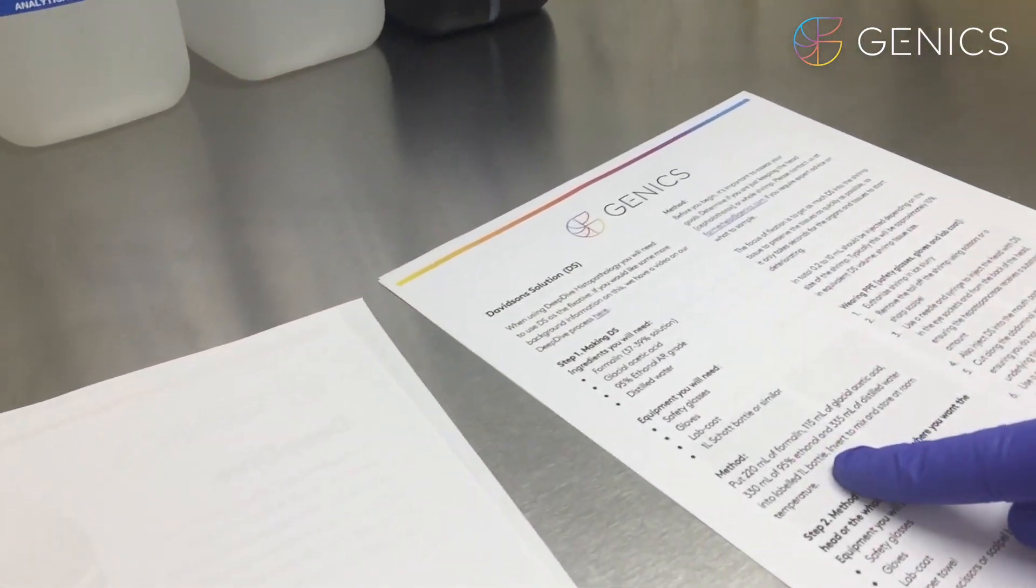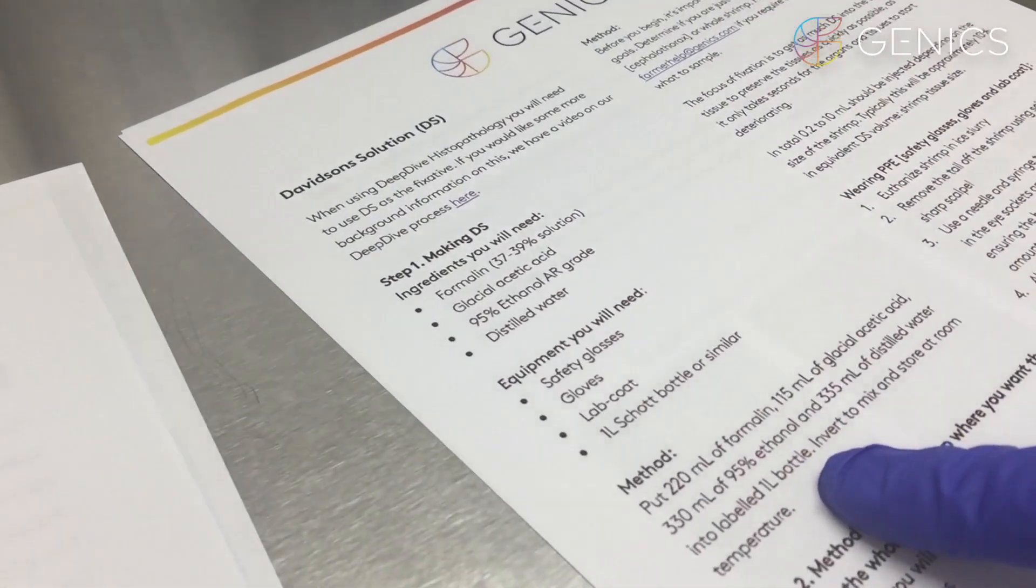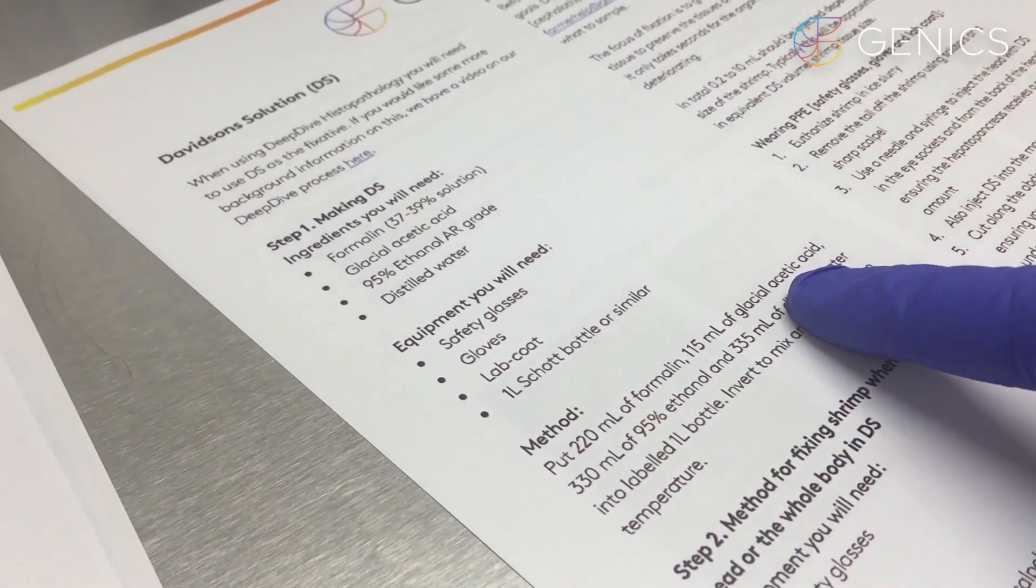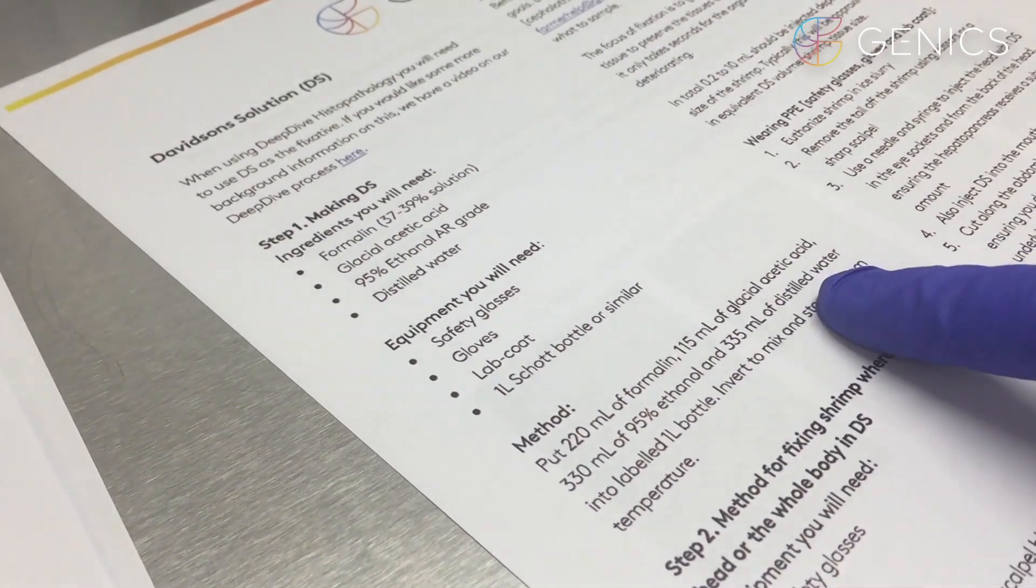So here in the deep dive brochure is the recipe for making up your Davidson solution consisting of formalin, glacial acetic acid, ethanol and distilled water.